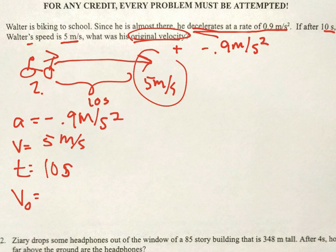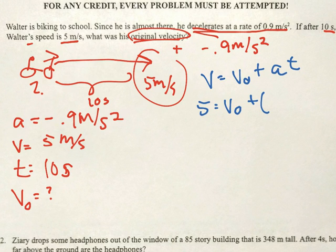And this whole time he was decelerating. Remember, decelerate means you are slowing down. So that would mean this is a negative 0.9 meters per second squared, because he's slowing down. He's technically accelerating in the negative direction.